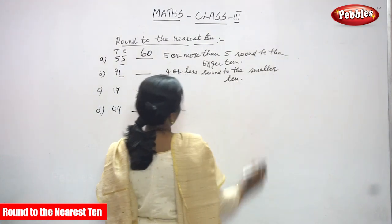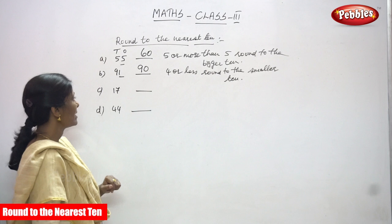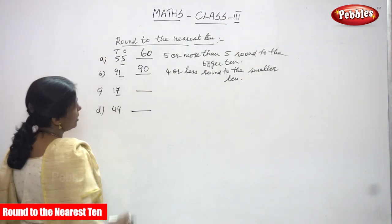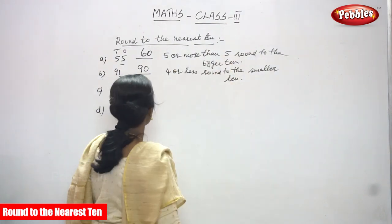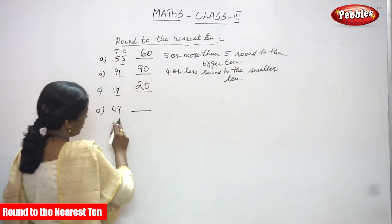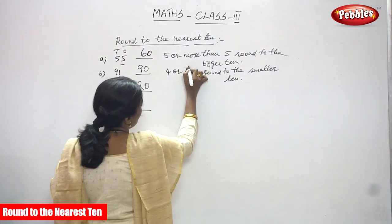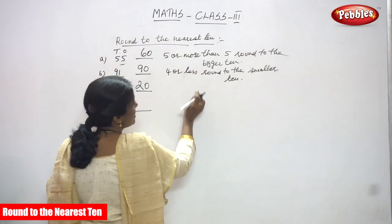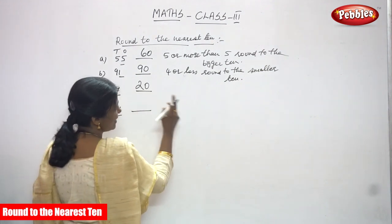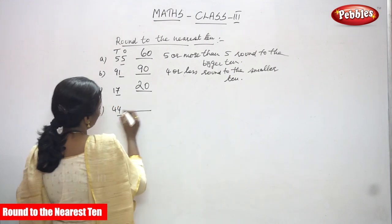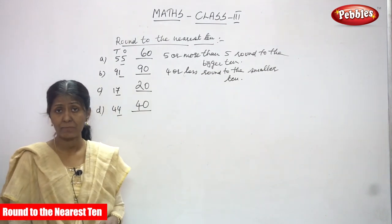Okay, 17 — look at the ones digit, 7. So the second rule applies: ones digit 5 or more than 5, round to the bigger 10 — that means 20. Okay, 44 — what is the ones digit? 4. First rule: 4 or less, round to the smaller 10. For 91, the answer is 90. For 44, the answer is 40. This is rounding to the nearest 10.